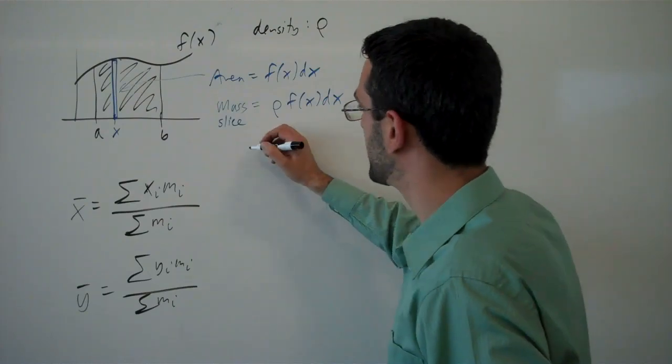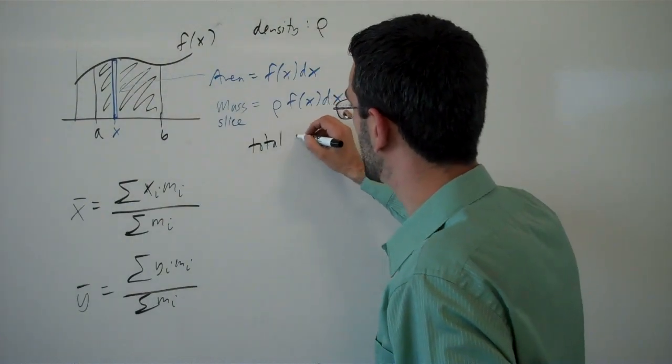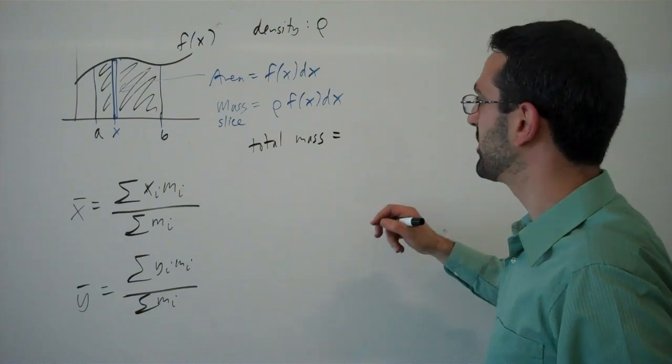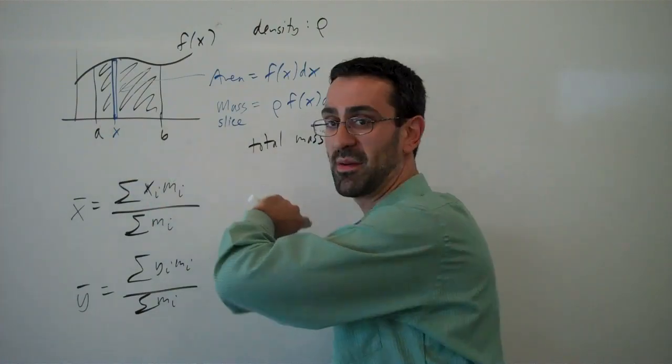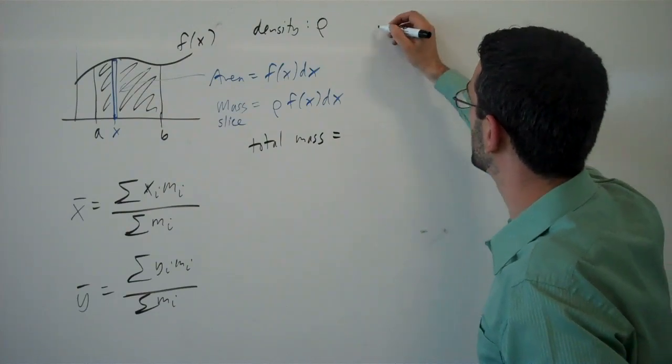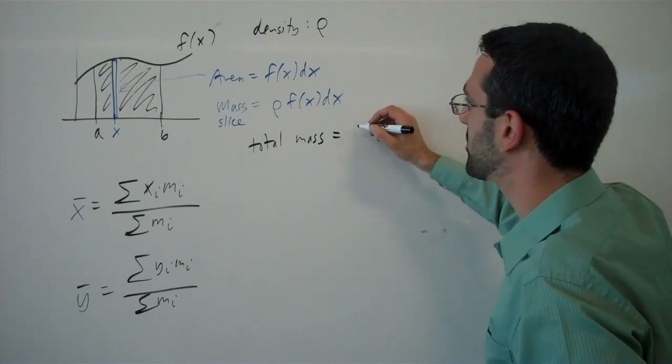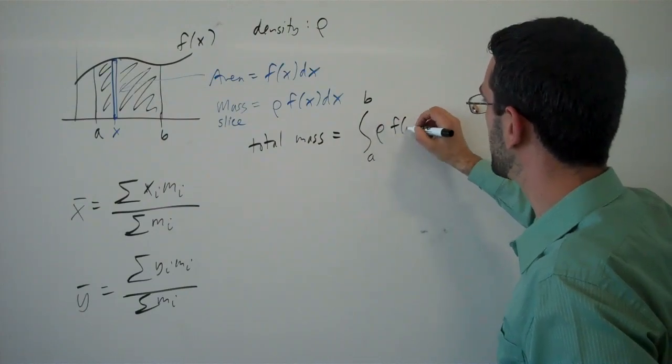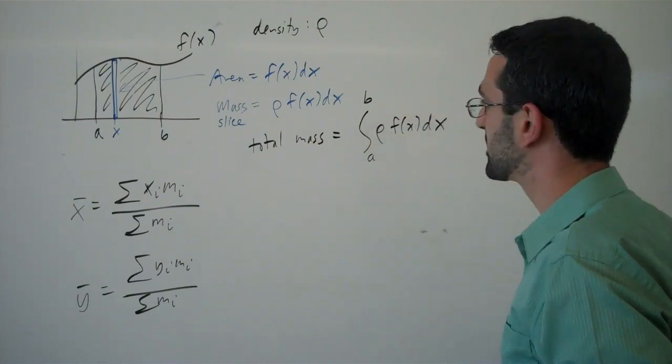So given that, the total mass of the lamina we can find by just adding up the mass of the slices, right? So the total mass will be just the integral of density times f of x dx.